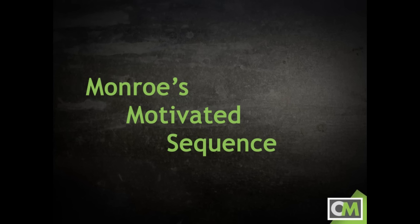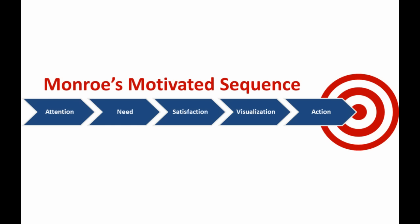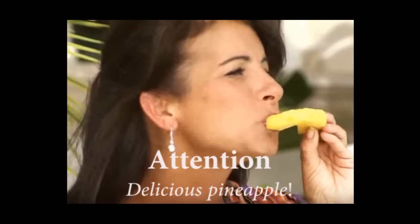Monroe's Motivated Sequence is the other organizational pattern specifically geared for persuasion. Advertisers have been using Monroe's Motivated Sequence for more than half a century because it's particularly effective at eliciting immediate action from the audience. Motivated Sequence follows a five-step pattern. I'll describe the steps and show images from a commercial that may help you recognize the pattern.